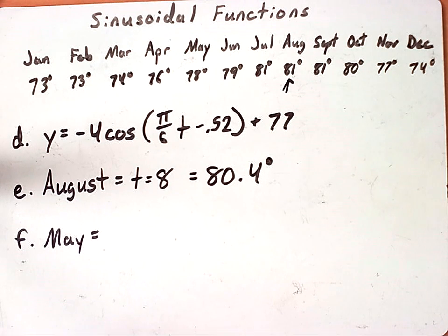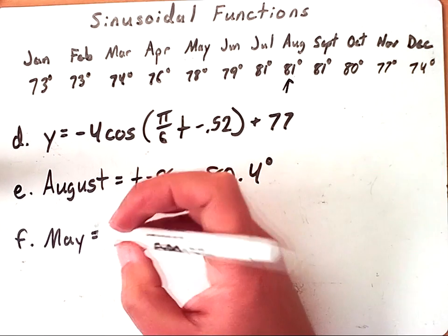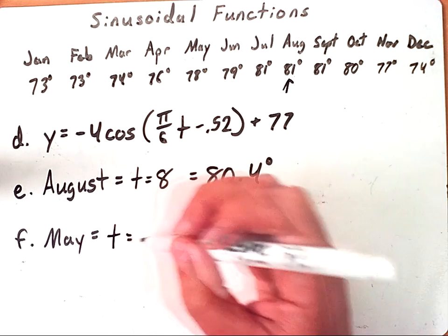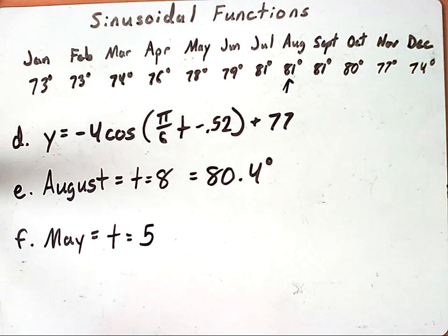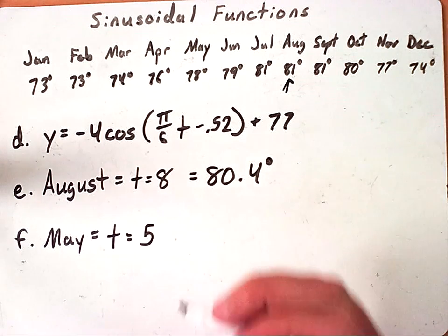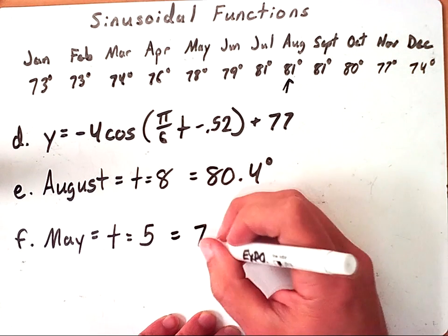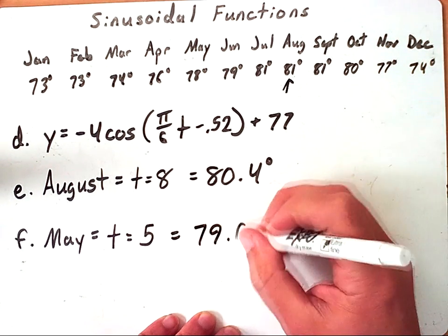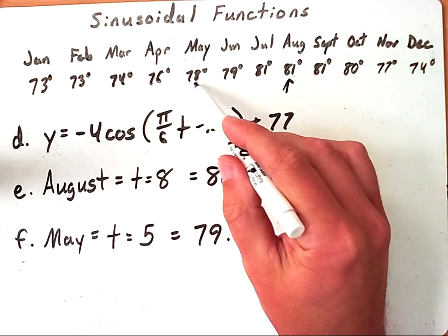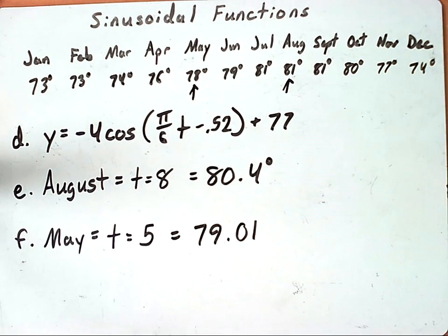We could do the same thing with May. May of course is the fifth month of the year so t would equal 5 in this equation. If I enter it in I would get that in May the temperature predicted by our model would be 79.01. If we went and looked at May we see that it is 78 degrees in Honolulu and our model predicted that it was going to be 79.01, so again very close, about a degree off from what the actual temperature was.